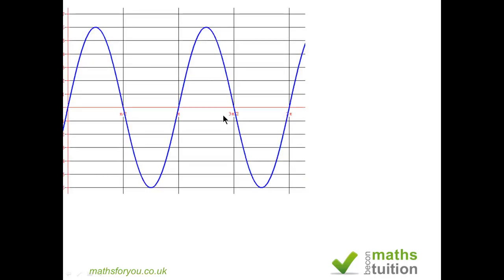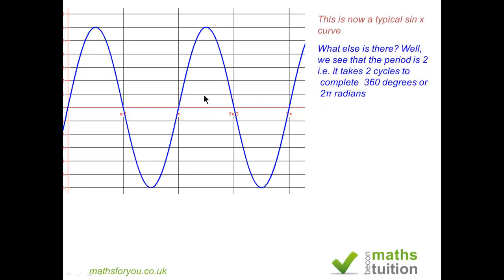Now this is what you get after you've moved your graph such that it is symmetrical about the x-axis or y equals 0. We note that we complete one cycle by the time we get to π radians and the second cycle we complete by the time we get to 2π radians.